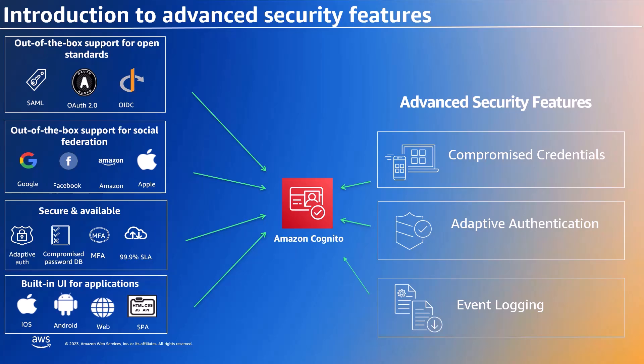So now you may be wondering, what are these advanced security features? Well, Cognito's ASF comprises three key features: compromised credentials, adaptive authentication, and event logging.